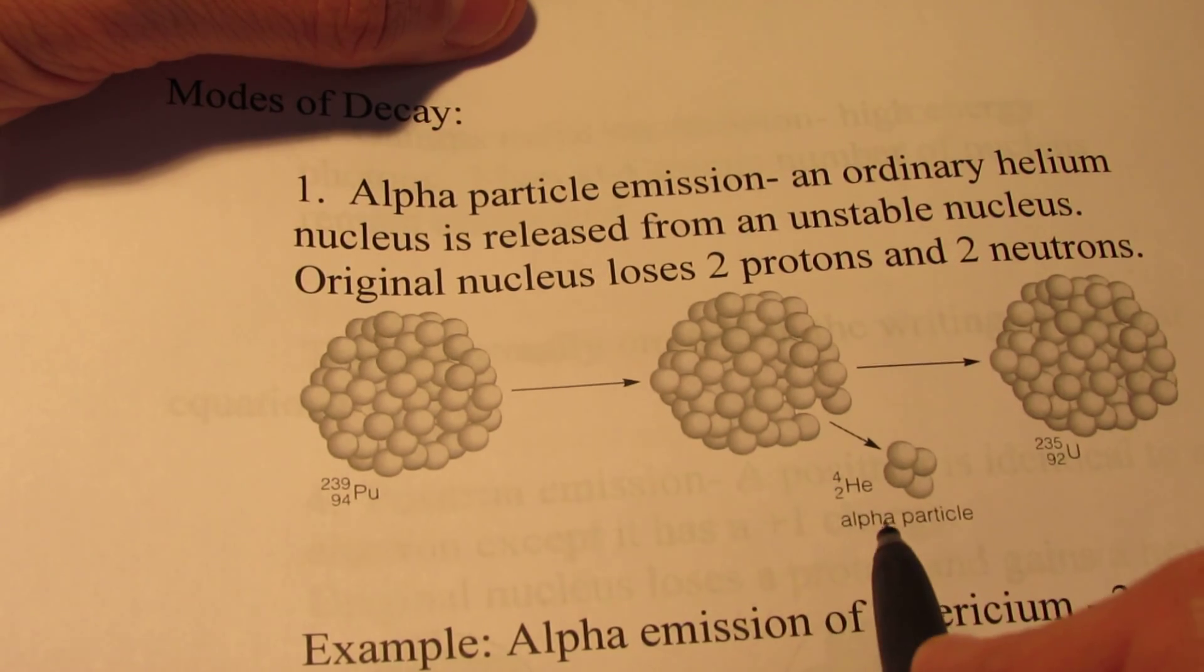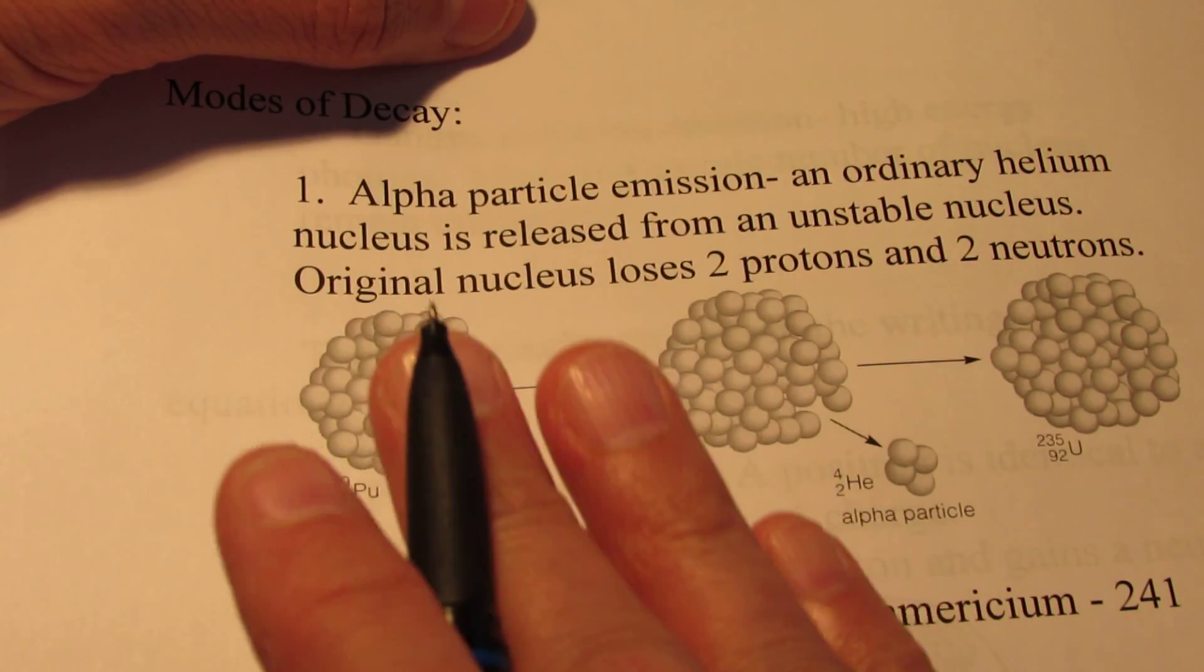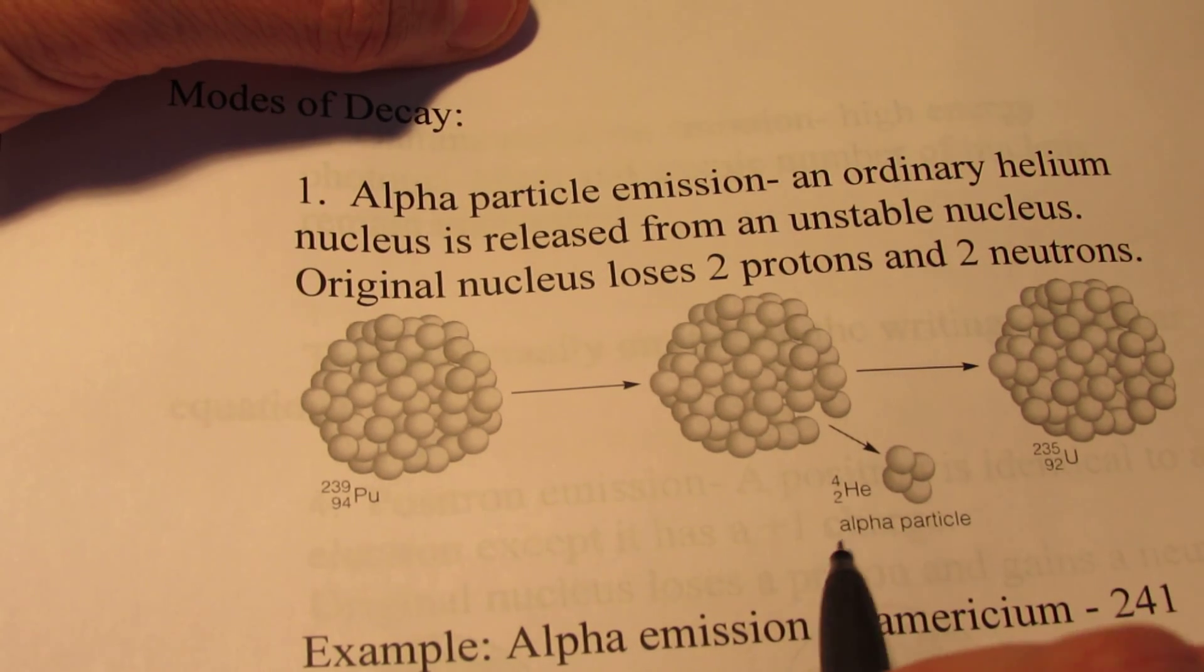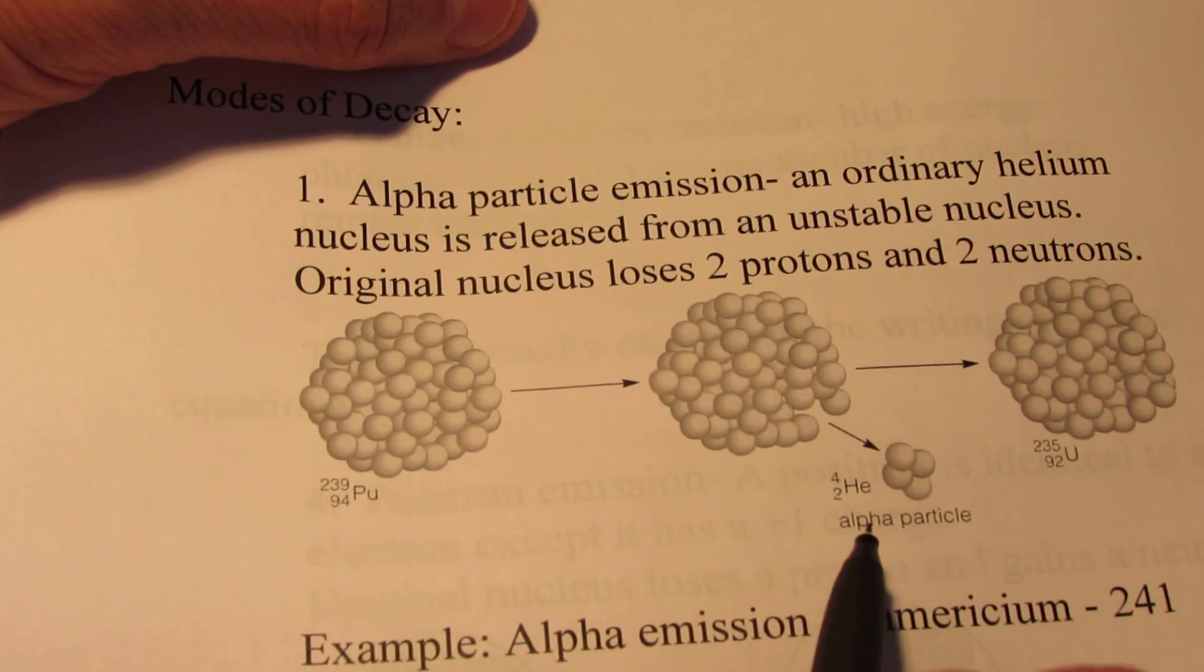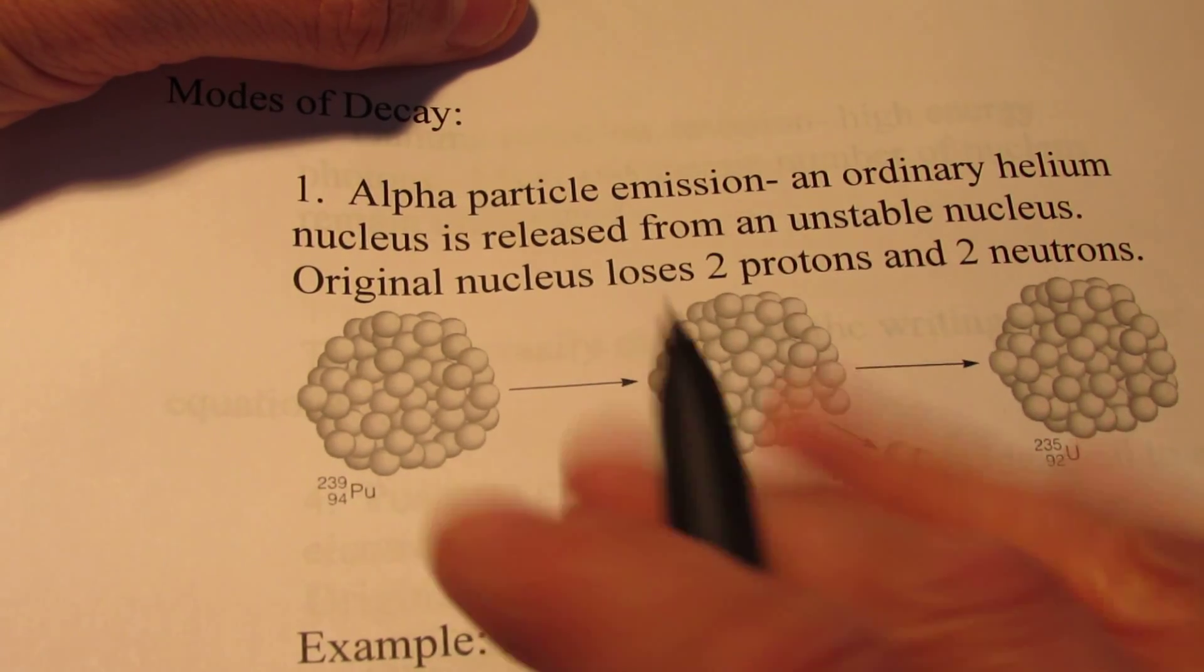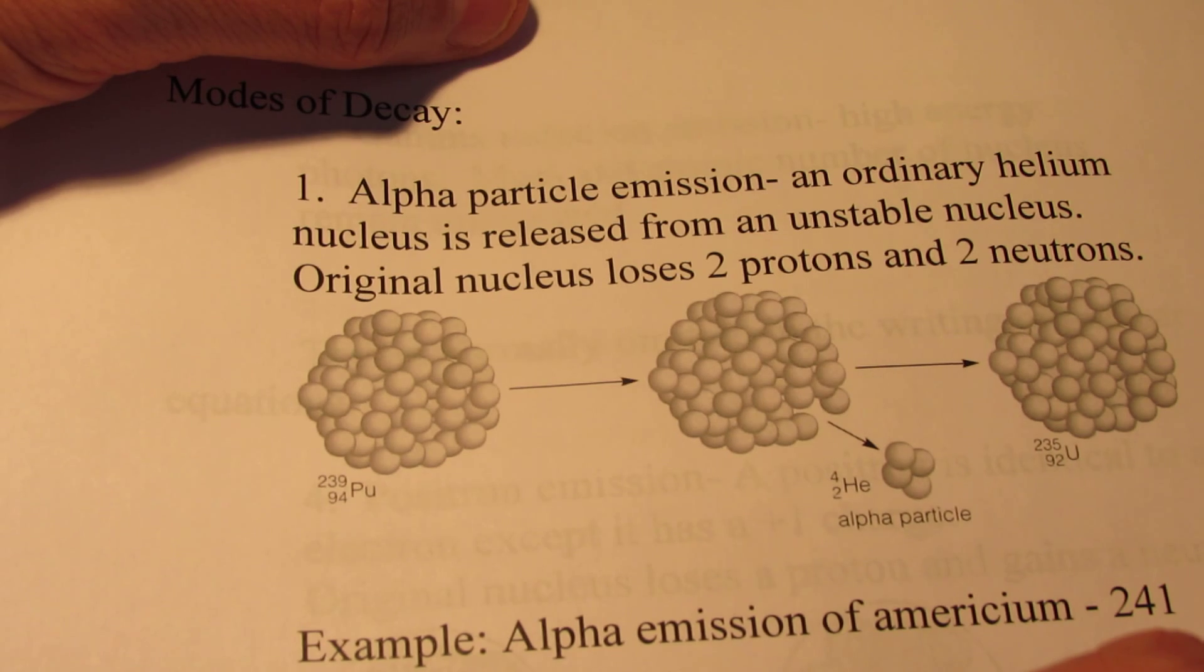Now I did not say that an alpha particle was completely identical to a helium atom. There's a big difference. That big difference is the velocity at which they're moving. Helium gas might travel at about a thousand miles per hour at room temperature.